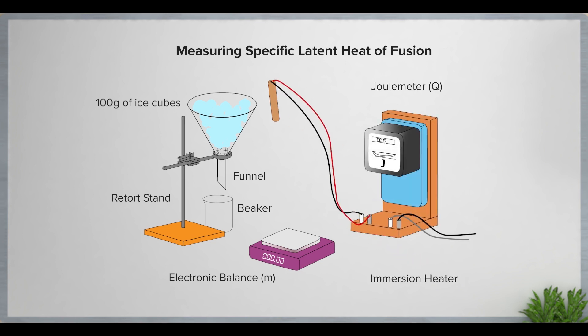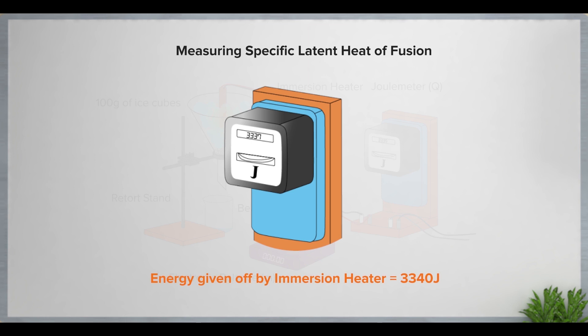Insert an immersion heater into the funnel to melt the ice cubes. The immersion heater is connected to a joule meter. This joule meter will record the energy given off by the immersion heater.